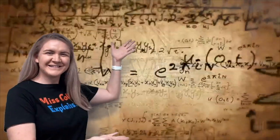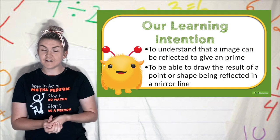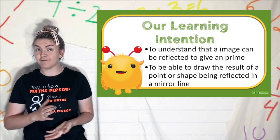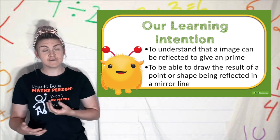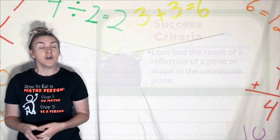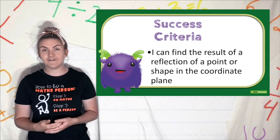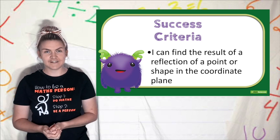Miss Collier explains reflections. Today our learning intentions are to understand that an image can be reflected to form a prime and to be able to draw the result of a point or shape being reflected over a mirror line. We will know we are successful when we can find the result of a point or shape being reflected on the Cartesian plane.